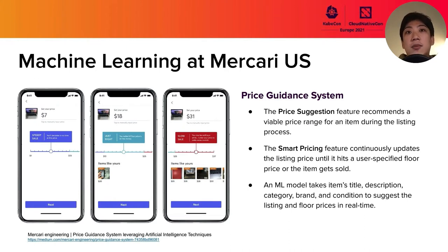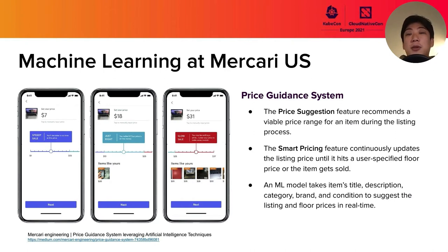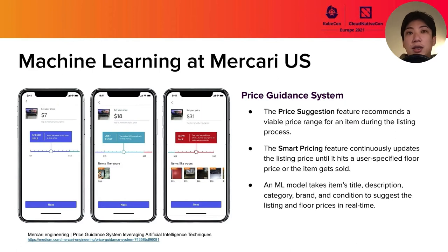The price guidance system consists of two features. One is price suggestion. The price suggestion feature recommends a viable price range when the customer makes a listing on our marketplace, and the customer can decide the floor price. The smart pricing feature gradually and automatically updates the item price to the floor price, and then that item will be promoted to potential buyers. To decide the item price range and floor price, we use a machine learning model.